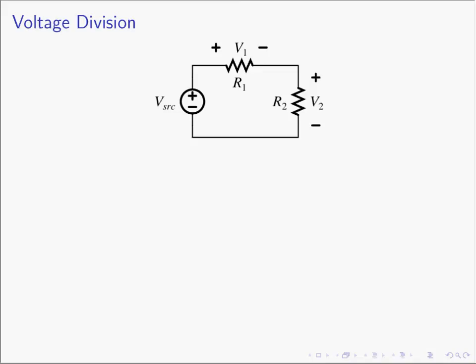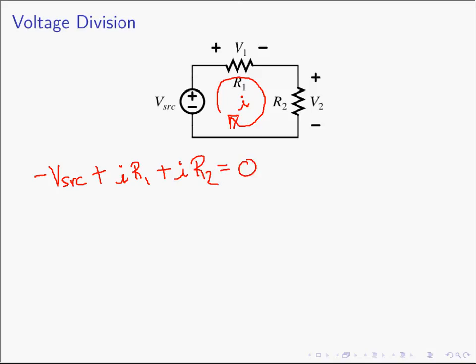Here we have voltage division. The voltage source vSource, R1, and R2 are all in series, so there is only one current flowing, which we label i. We find i by writing our KVL equation: minus vSource plus v1 (which is i·R1) plus v2 (which is i·R2) equals zero. Solving, the current i equals vSource divided by R1 plus R2, since R1 and R2 in series form an equivalent resistor.